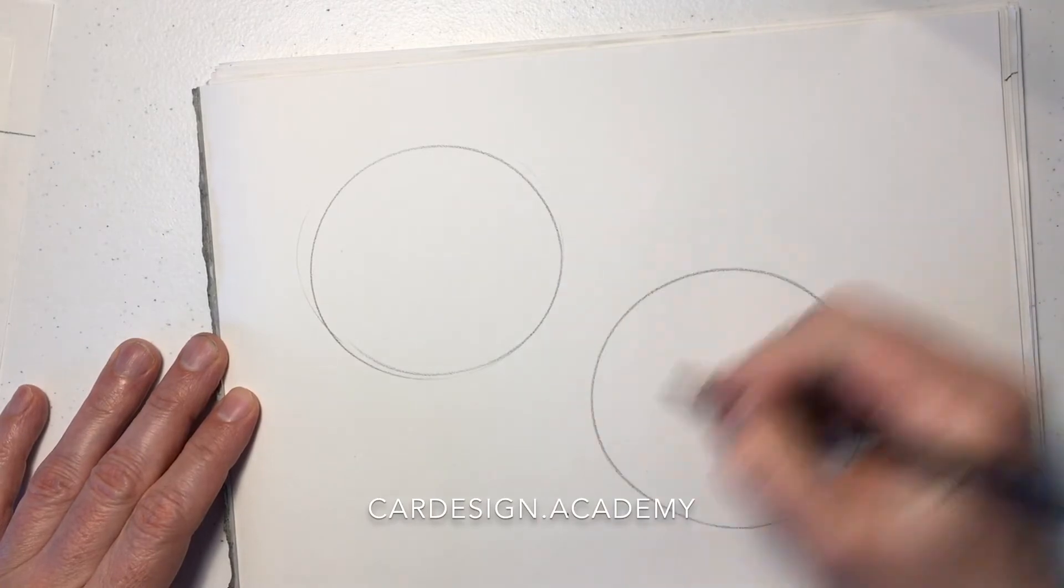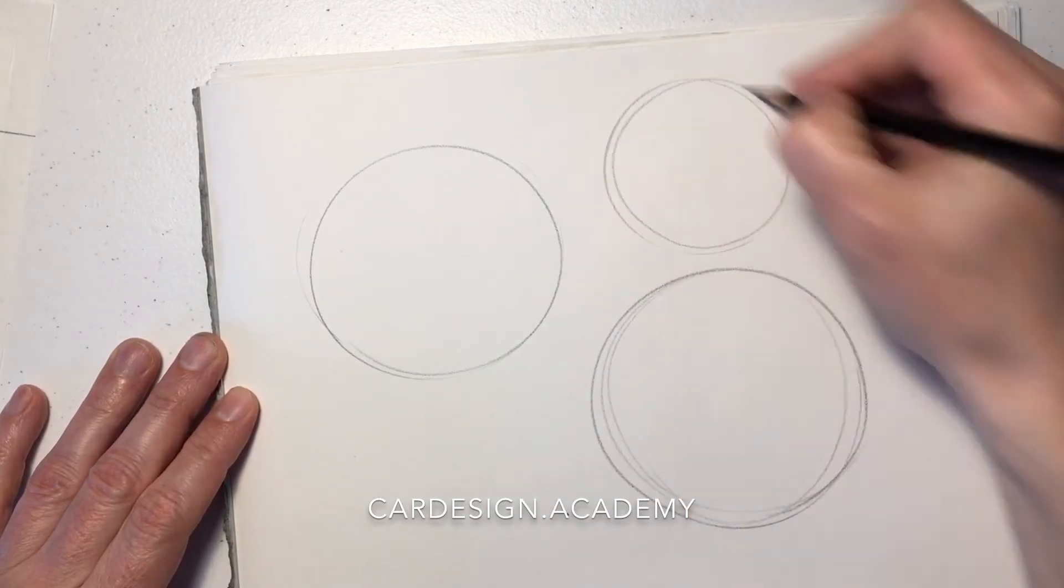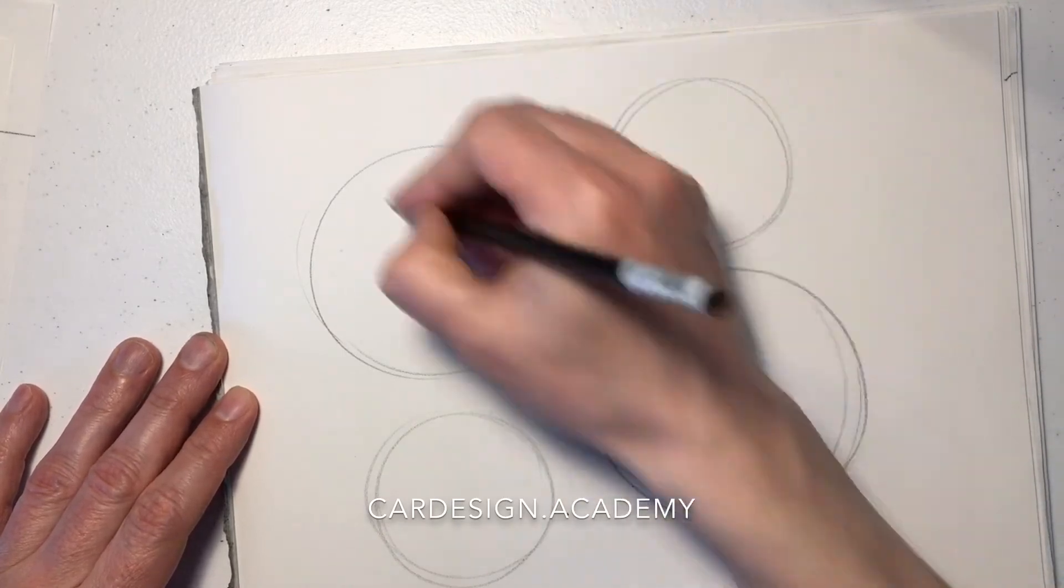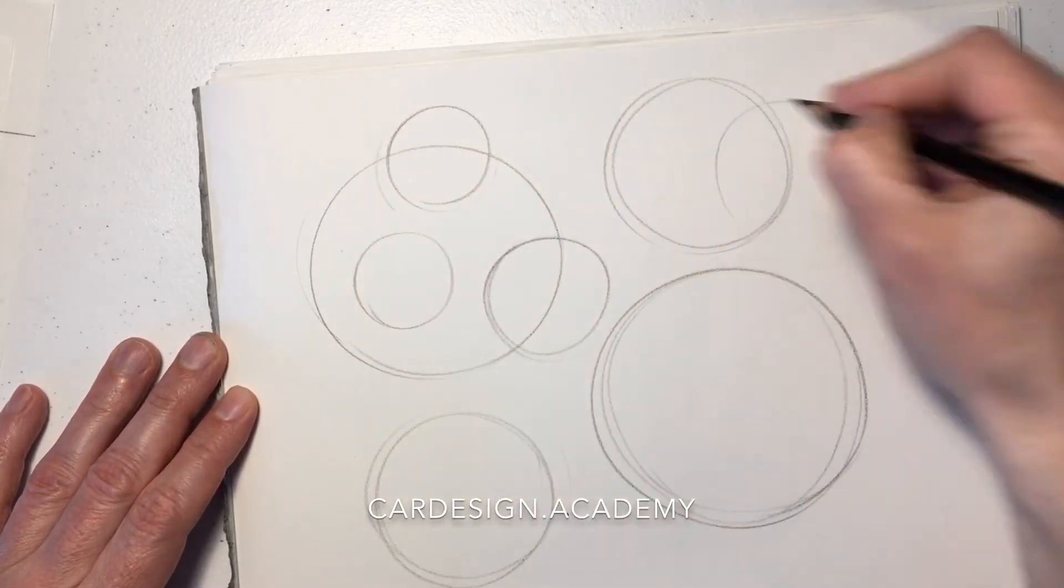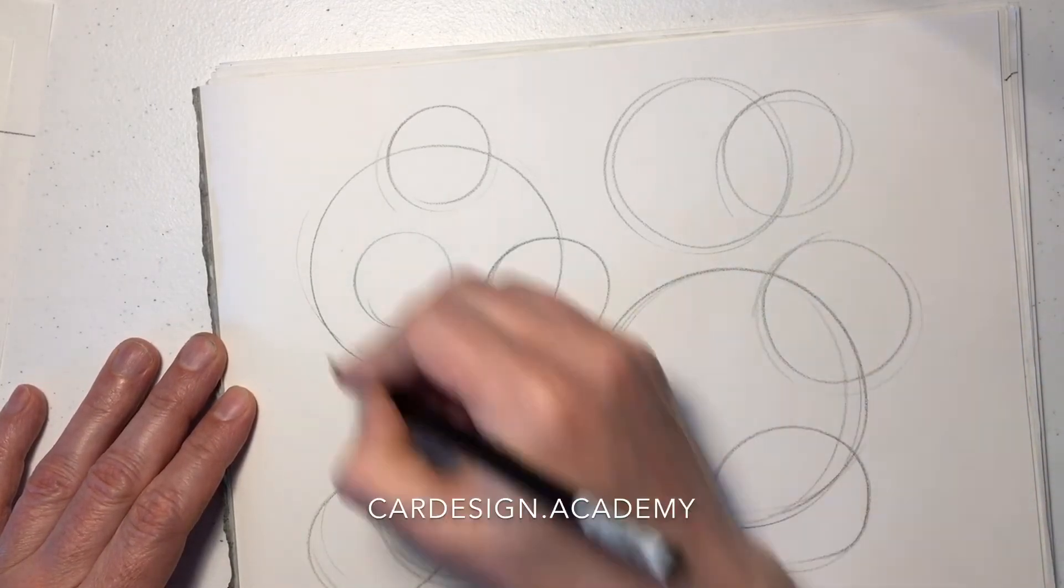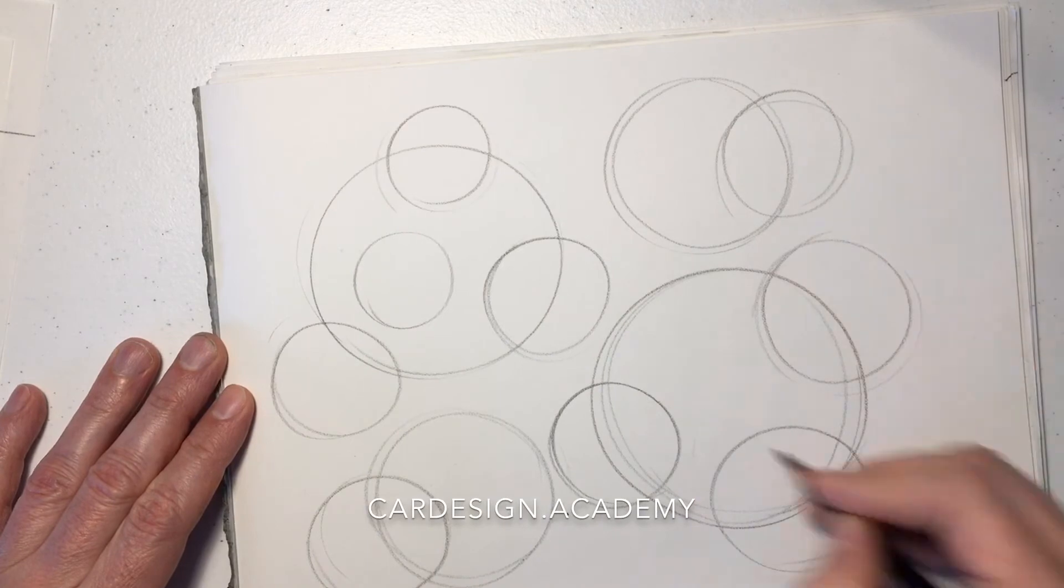Big circles, little circles, medium-sized circles. Try to make them as circular as you can. None of them are going to be perfect, but with practice you'll get better and better.